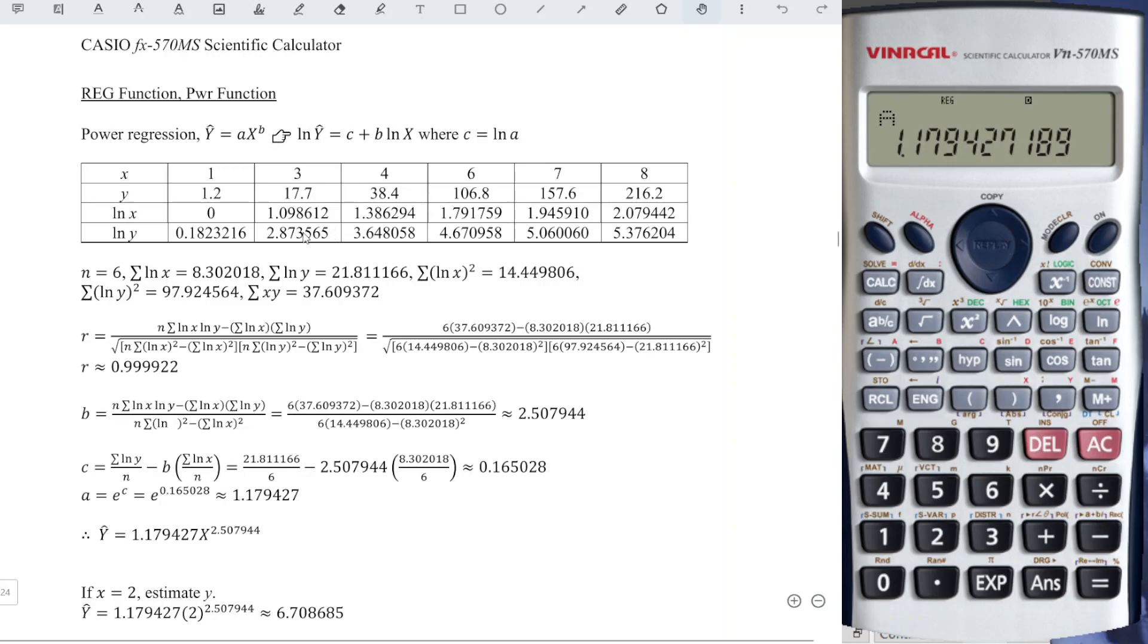If we want to provide a high accuracy value, then we should take as many decimals as possible. The calculator always takes all the decimal points, so it's definitely more accurate compared to manual calculation, unless we take all the decimal places.